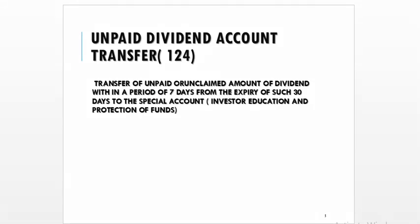When the dividend is declared at the Annual General Meeting, it has to be paid within 30 days of the declaration. The unpaid or unclaimed amount of dividend must be transferred within 7 days from the expiry of such 30 days to the special account, that is the Investors' Education and Protection Fund account.